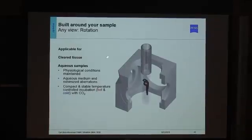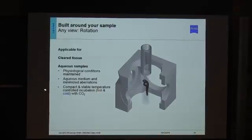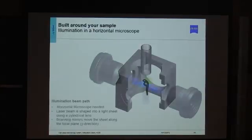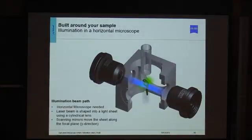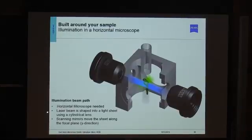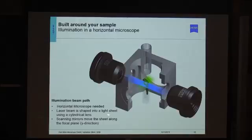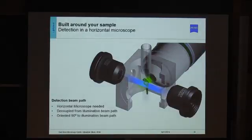The illumination light path in the light sheet microscope is different from other systems: the illumination light path is oriented horizontally, with the laser being shaped into a light sheet using cylindrical lenses. Scanning mirrors move this light sheet along the Y axis to scan over the sample. The key feature is that the detection objective sits perpendicular to the illumination — it is decoupled from the illumination. In other systems, you illuminate and detect along the same optical axis, exciting all focal planes along that axis. With light sheet illumination, you generate only a very thin layer of light, illuminating only the focal plane of the detection objective.